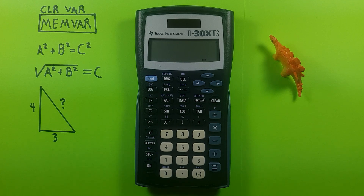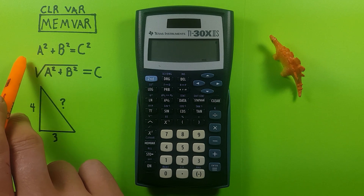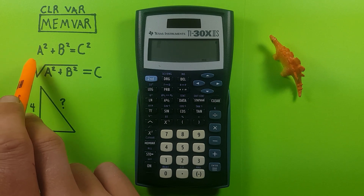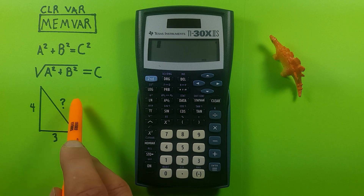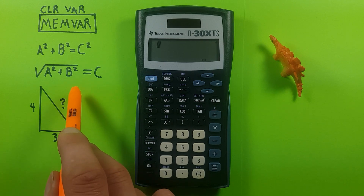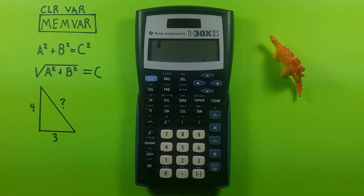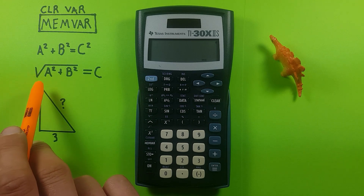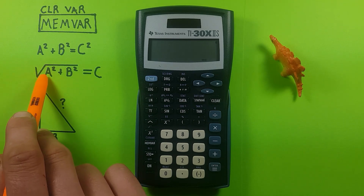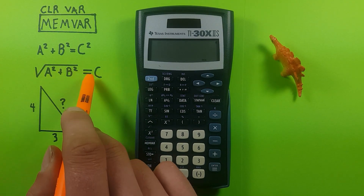An example of this would be solving a Pythagorean theorem question: A squared plus B squared equals C squared, to determine the length of side C of a right angle triangle. If we know sides A and B, we can rewrite this formula as the square root of A squared plus B squared equals C.